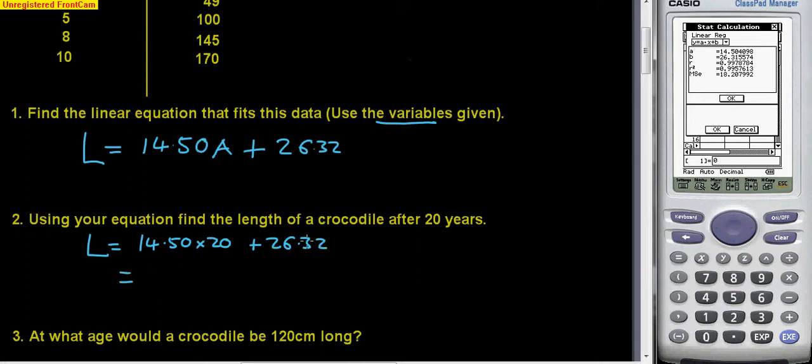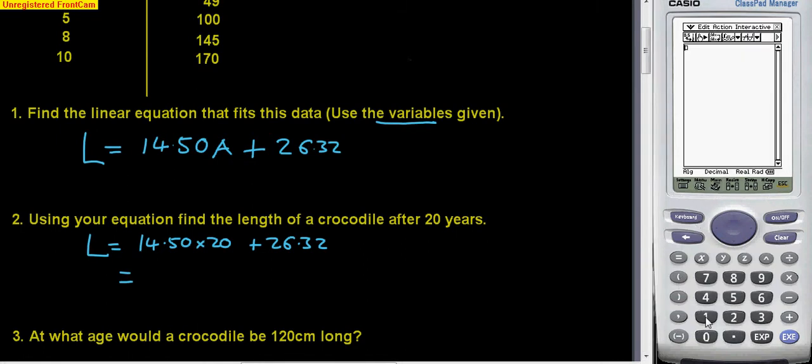And this will be a calculator activity to work out what this lot comes to. So if I go to the main screen, and it is 14.5 times 20, plus 26.32. And that lot comes to 316.32. So that's how long the crocodile will be, 316.32. And that's the second part finished. And I think I'll pause it here and do the rest of this on another video.